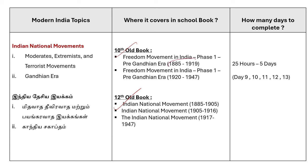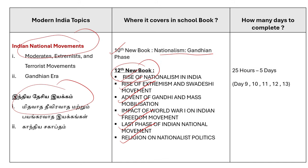You can refer to the lessons covering 1885–1919 and 1920–1947. The 12th book covers 1885–1905, 1905–1916, and 1917–1947. You can refer to the new book alongside the old book — you can use the old book content as well.